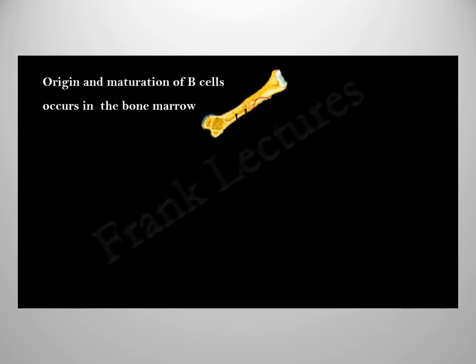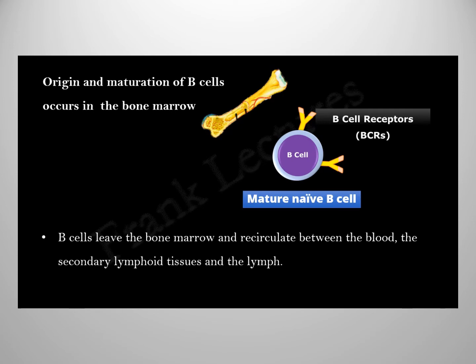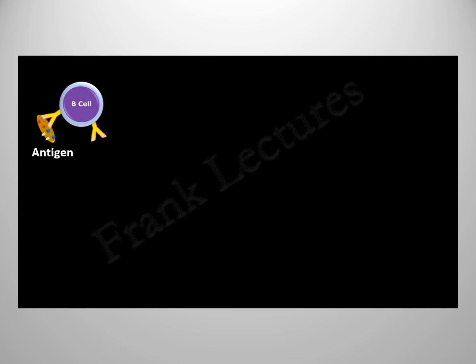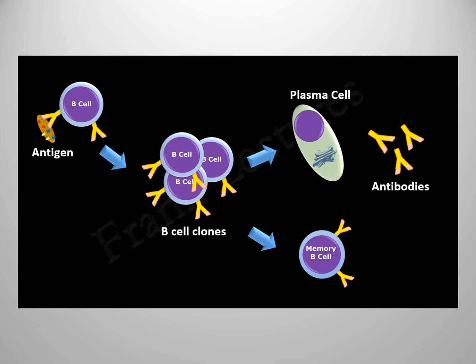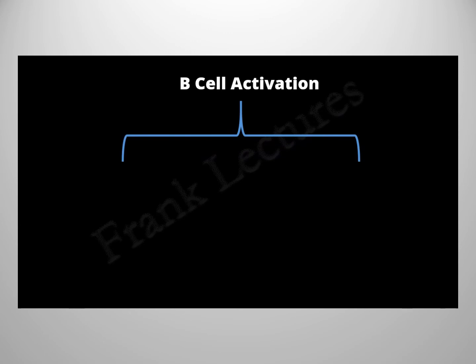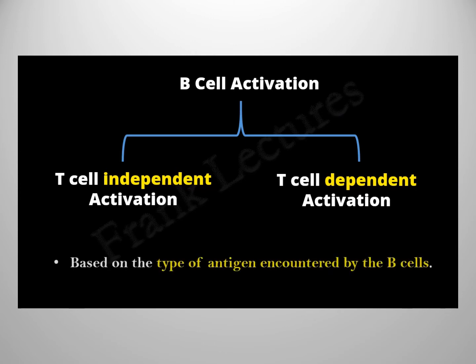B cells originate and mature in the bone marrow. Mature naive B cells have B cell receptors for recognizing specific antigens. These mature B cells leave the bone marrow and recirculate between the blood, secondary lymphoid tissues, and the lymph. When naive B cells encounter their specific antigens, they get activated and differentiate into antibody-producing plasma cells and memory B cells. There are two ways a B cell can get activated: T cell independent activation and T cell dependent activation, based on the type of antigen encountered.